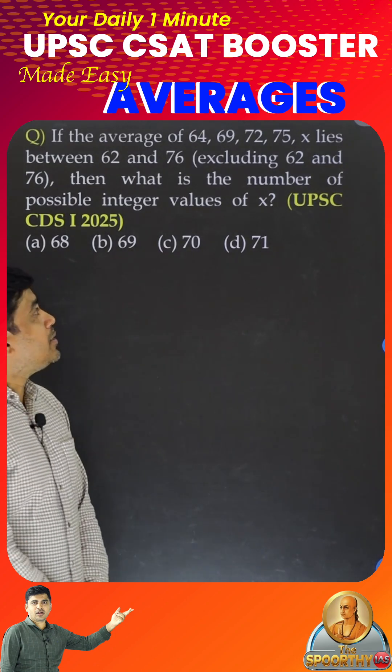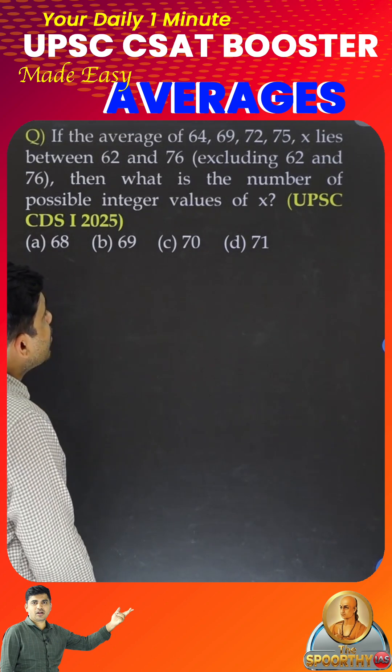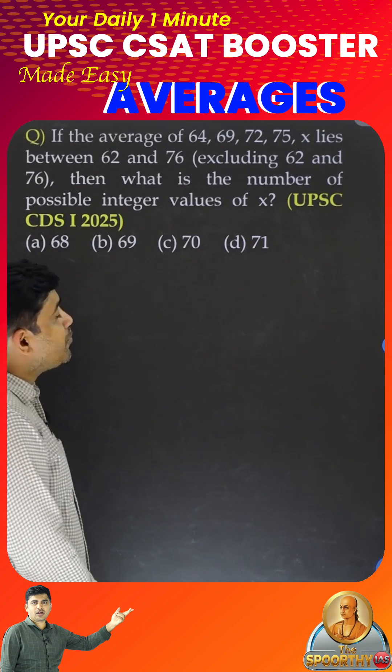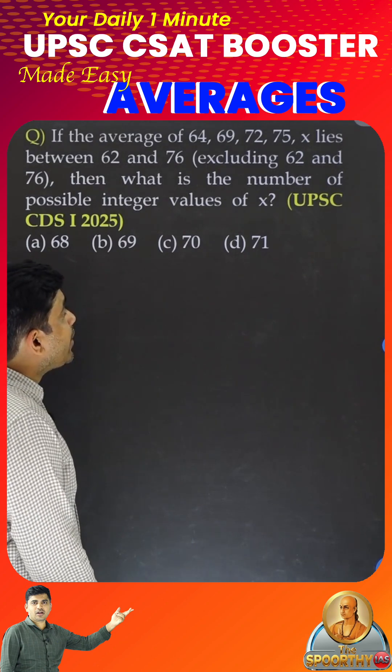So, what is given here? There are 5 numbers: 64, 69, 72, 75, and X.